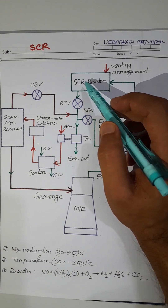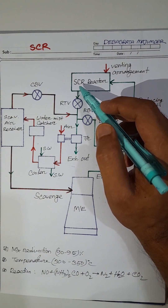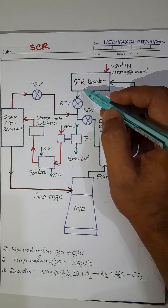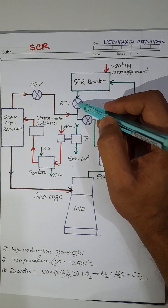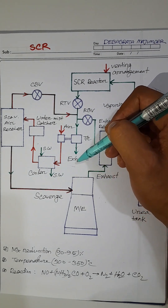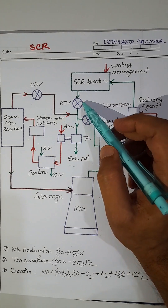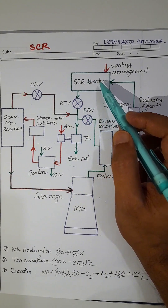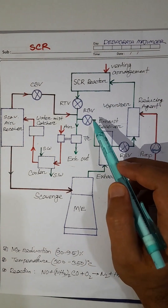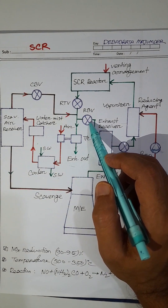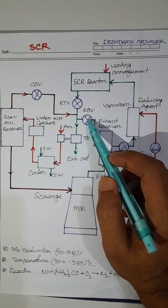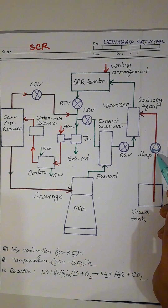Soot blow is done to prevent contamination of the reactor element, done by compressed air of 7 bar. Exhaust gas is coming through and RTB is slightly open. The exhaust gas is coming here and going out. Whenever the exhaust temperature reaches between 300 to 350 degrees centigrade — the desired exhaust temperature — the SCR control unit closes the RBB and starts the urea dosing pump.